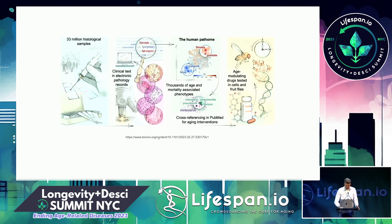This work is available on a bioRxiv preprint, and the data — the human pathome — is available at pathoage.com. It's a free resource, still being built, but all of the data is there.